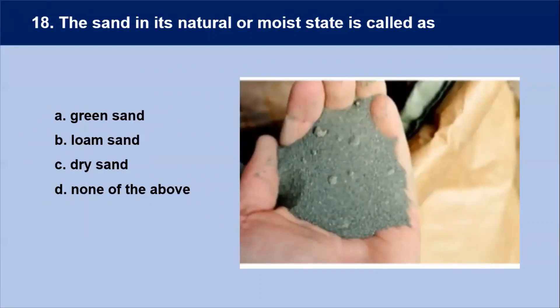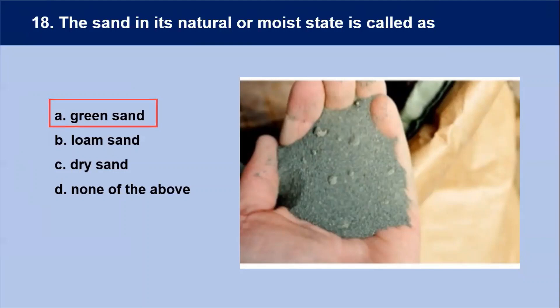Next question: the sand in its natural or moist state is called — green sand is actually not green in color, but 'green' in the sense that it is used in a wet state. Green sand is a mixture of silica sand, clay, and water. Our answer is A — green sand.